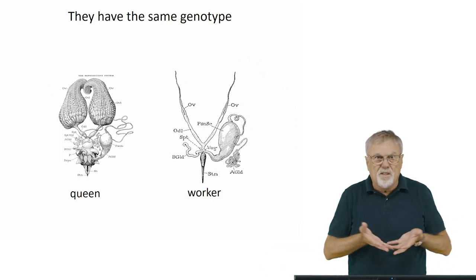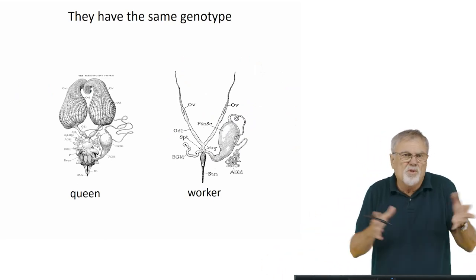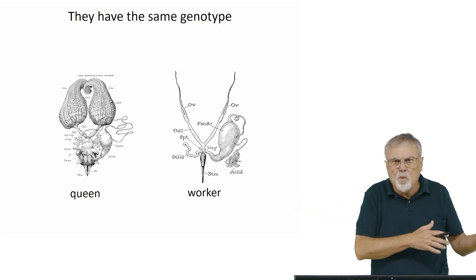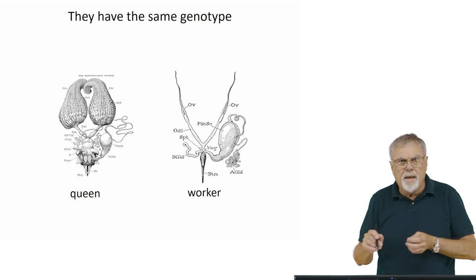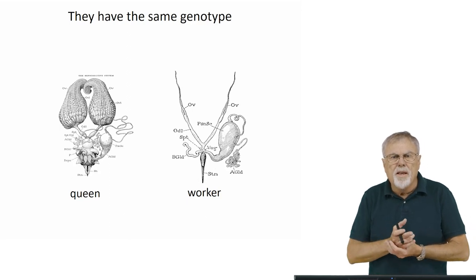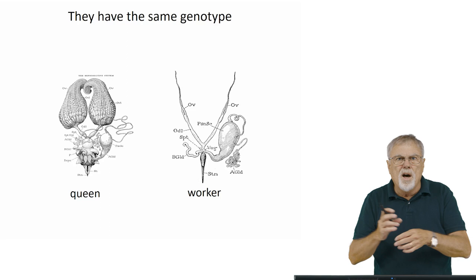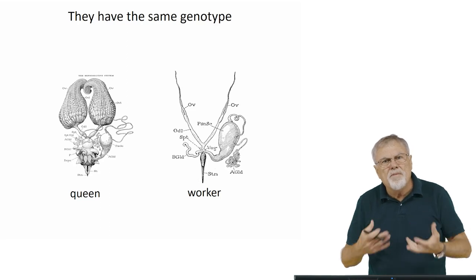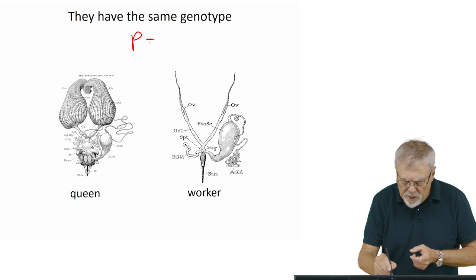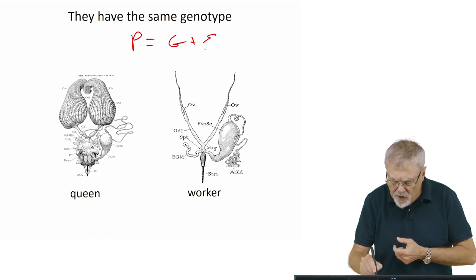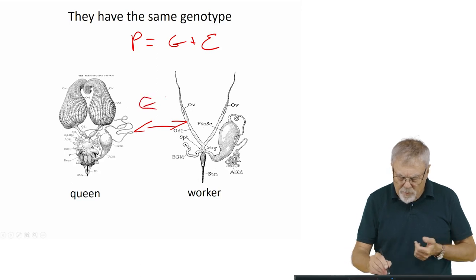Queen and worker honeybees have the same genotype. There are no genes that say you're going to be a queen versus a worker — they're the same. The difference between a queen and a worker in their anatomy is based on what they've been fed. It's purely environmental. Remember, phenotype equals genotype plus the environment. Here, the difference between them is all environment.